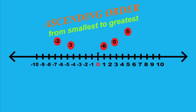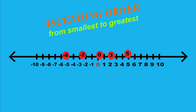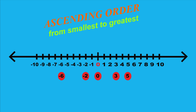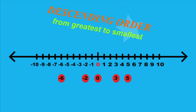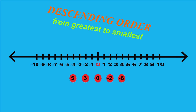Let's put these numbers in ascending order — that is from smallest to greatest. First, put them in position on the number line. In ascending order from smallest to greatest, they are: negative 6, negative 2, 0, 3, and 5. If we put them in descending order from greatest to smallest, they are: 5, 3, 0, negative 2, and negative 6.